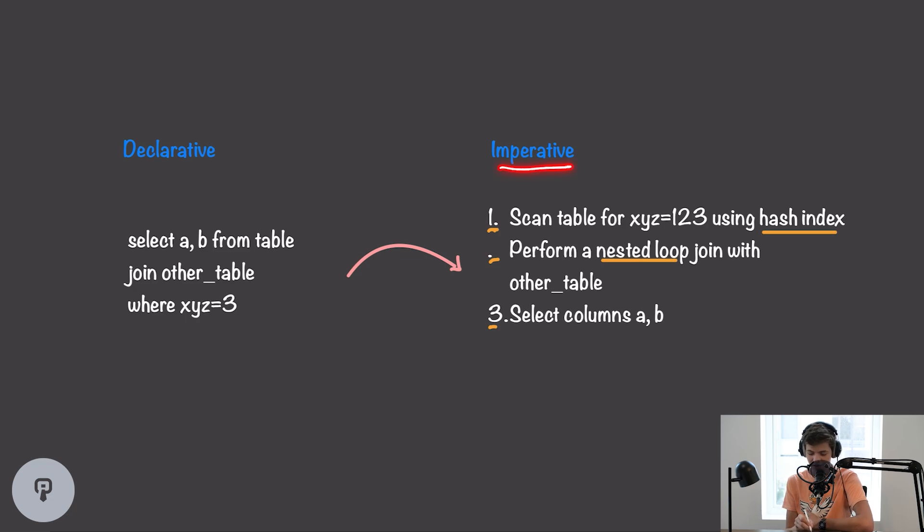On the other hand, we have imperative statements like this, where we're telling the database that we want to scan the table for xyz equals one, two, three using a hash index. And then we're telling it that we want to use a nested loop join to join on the other table. And then after we do both of those things, we want to select the two columns A and B.